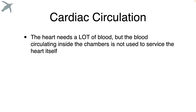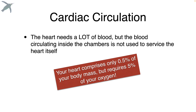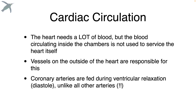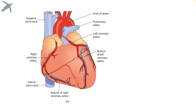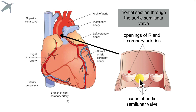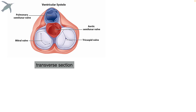Finally, we have cardiac circulation. The heart needs a lot of blood, but interestingly, the blood inside the heart isn't used to service its own cells. The heart makes up only 0.5% of your body mass but requires 5% of all your oxygen, so the heart needs its own circulatory system. A key fact is that coronary arteries are fed during ventricular diastole, unlike all other arteries of the body. The aortic valve has three cusps or flaps, and just superior to them are the openings of the right and left coronary arteries.